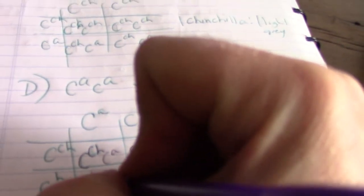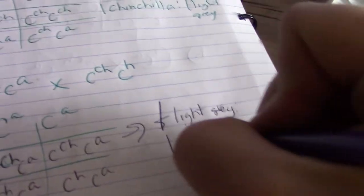Right? So we have, so we'll have CACA and CCHCH. And then this is where you get your light gray combo. Pen just ran out. And, I'm sorry about that. So we have C CH CA, CCH CA, CH CA, and CH CA. So this gives you one light gray to one Himalayan, and that gives you your one-to-one ratio.